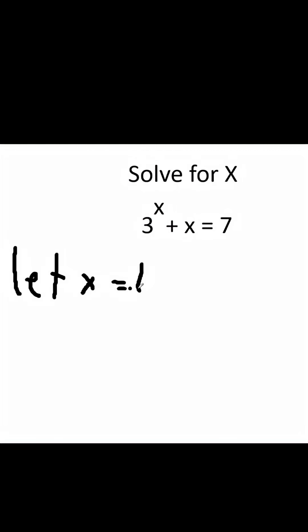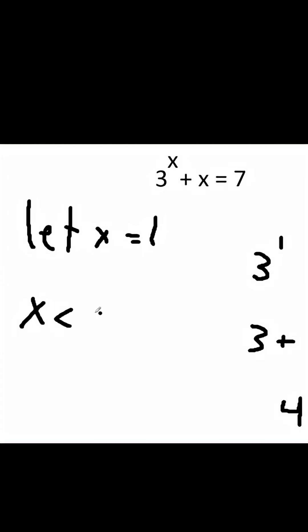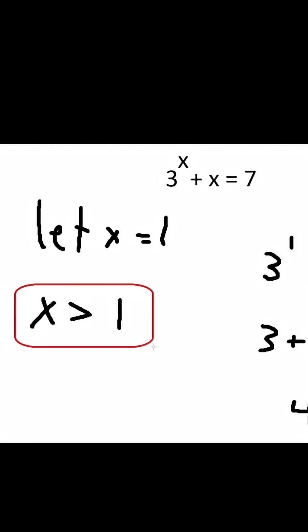Let's say that x is equal to 1. We have 3 to the 1 plus 1 is equal to 7. 3 to the 1 is just 3, and then plus 1 is equal to 7. 4 is less than 7. So we know that x has to be greater than 1. Let's put a box around this and try a different value.